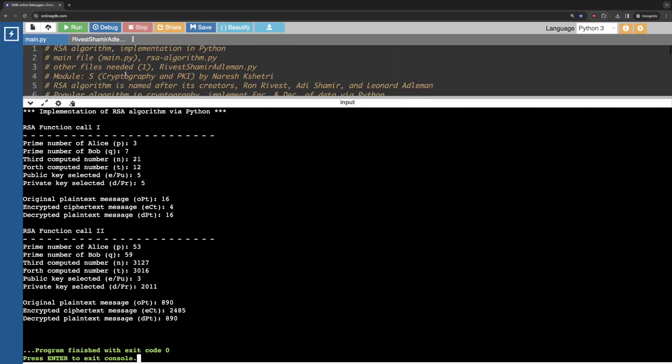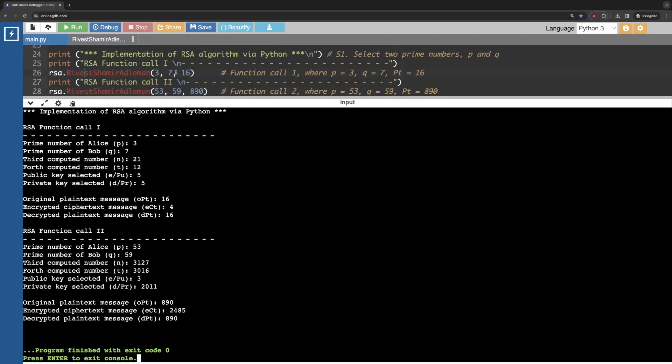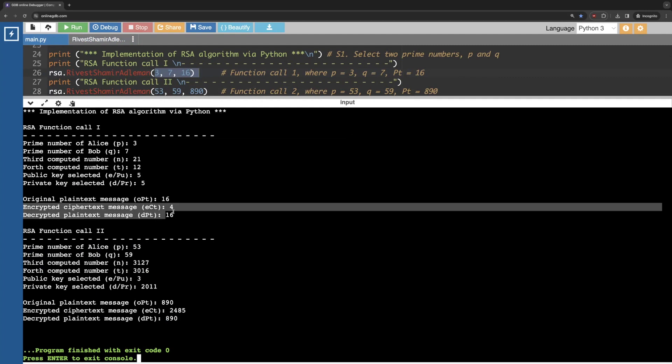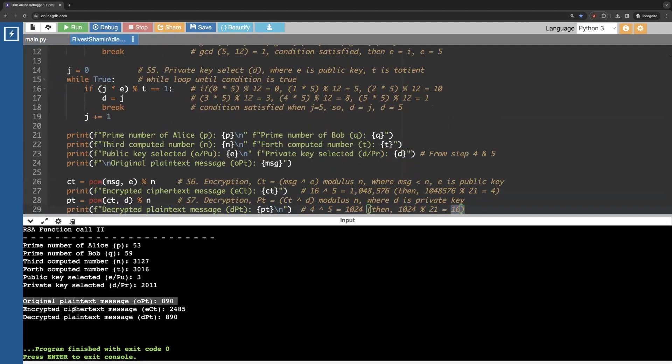You can see this runs for both calls. I just want to focus on the first call where we pass 3, 7 and 16. So the original plain text encrypted ciphertext is 4 and the decrypted plain text is 16 on Bob's end. Although we have to use two big prime numbers, for the sake of example, I have just used 7 and 3 to make you understand. And in this way, I have done the function call second taking 53 and 59, which results in the same way. Plain text, then encrypted ciphertext and the decrypted plain text. I hope that helps and thank you for watching.